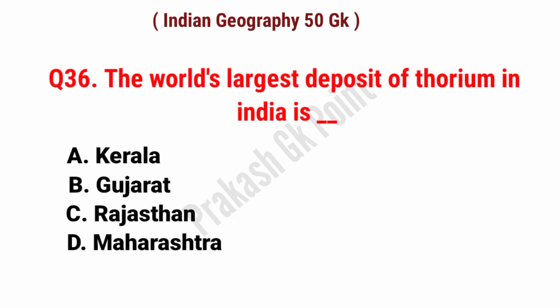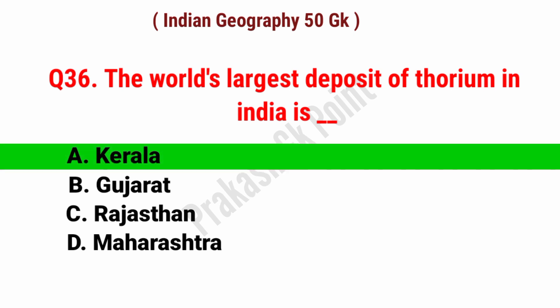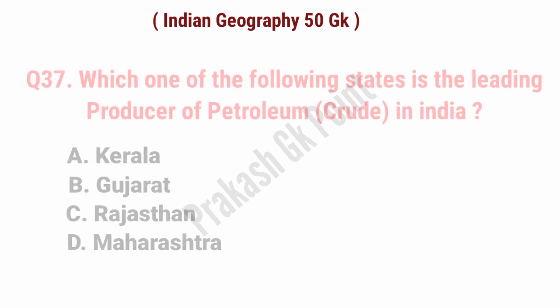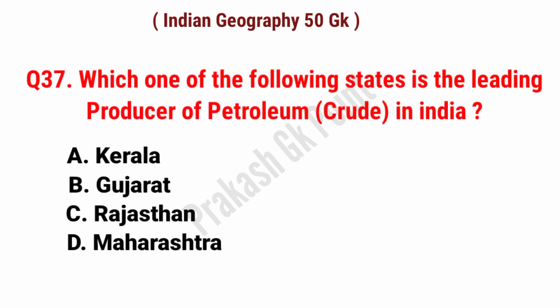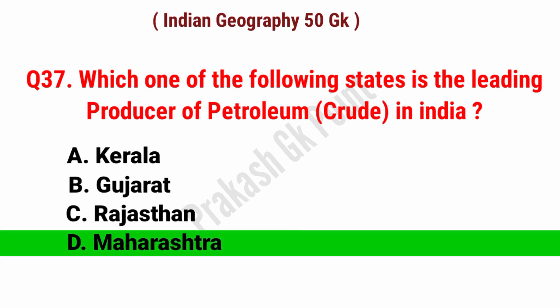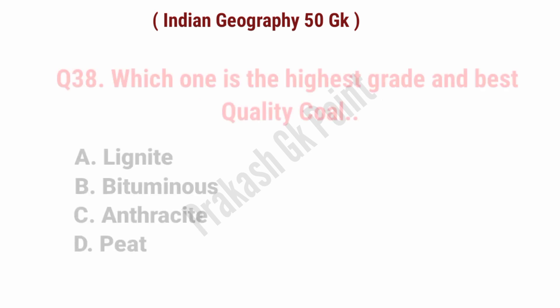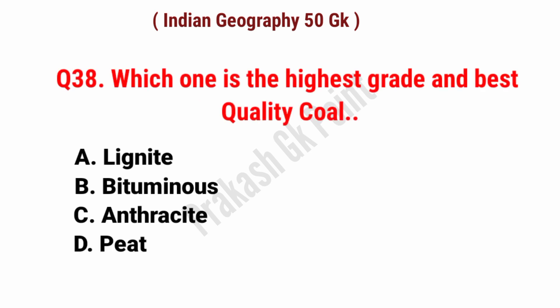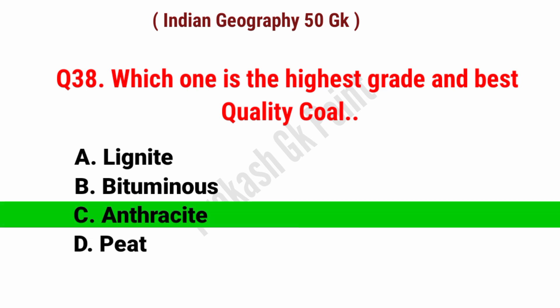The world's largest deposit of thorium in India is located in? Answer: option A, Kerala. Which one of the following states is the leading producer of petroleum in India? Answer: option D, Maharashtra. Which one is the highest grade and best quality coal? Answer: option C, Anthracite.